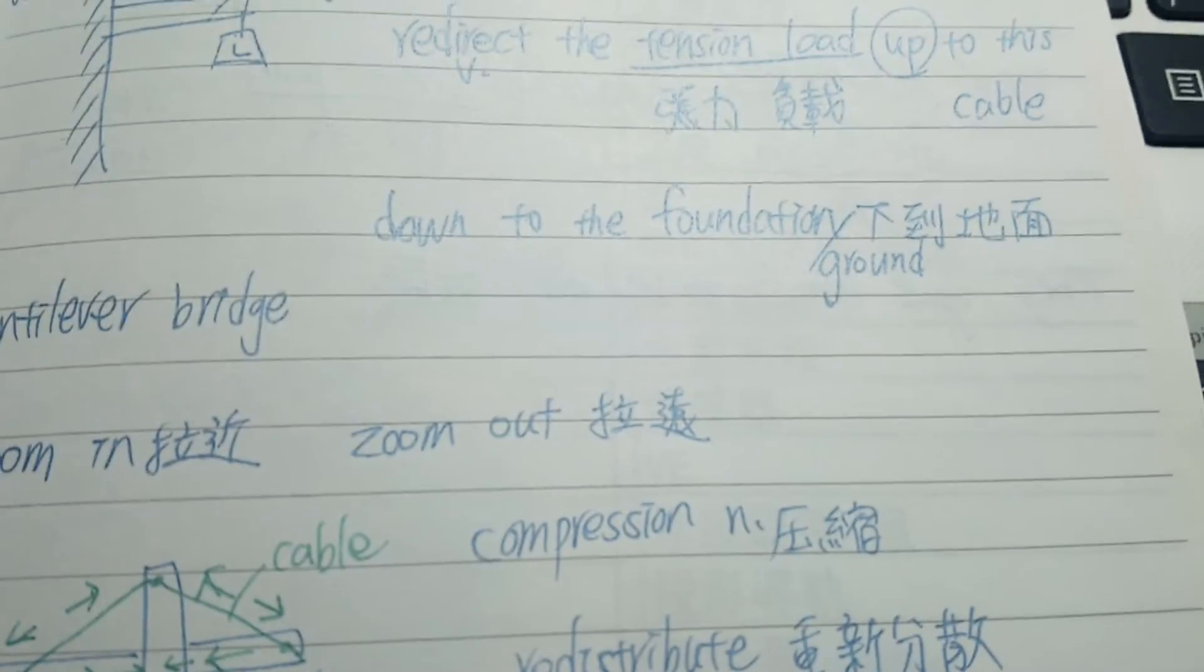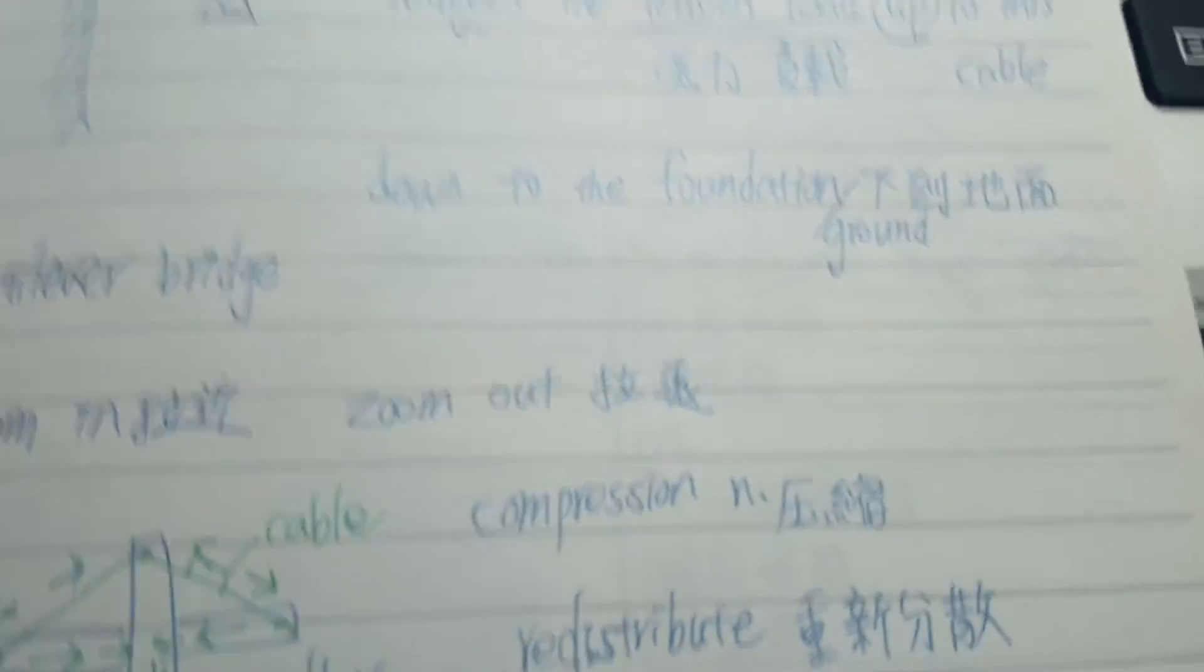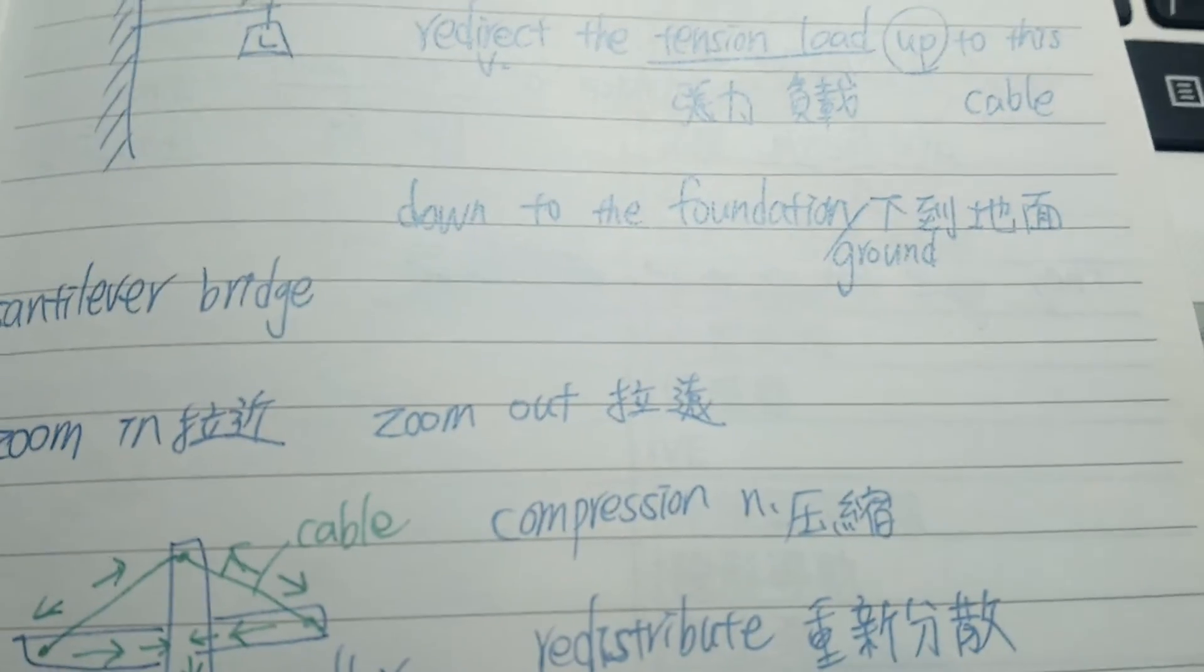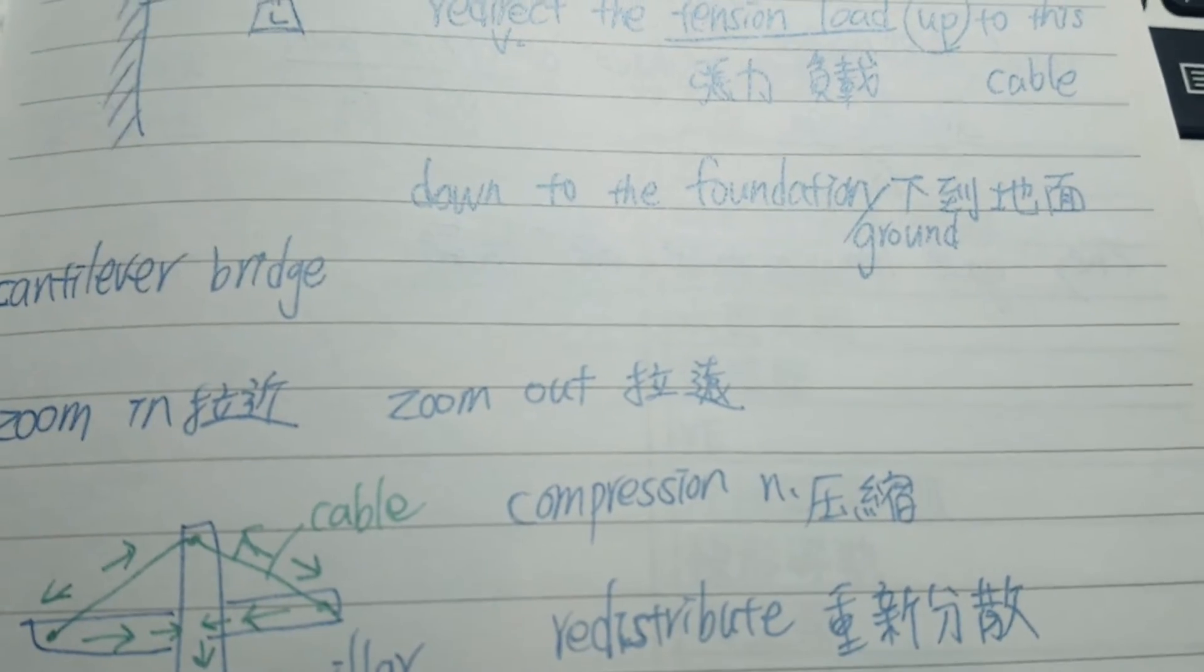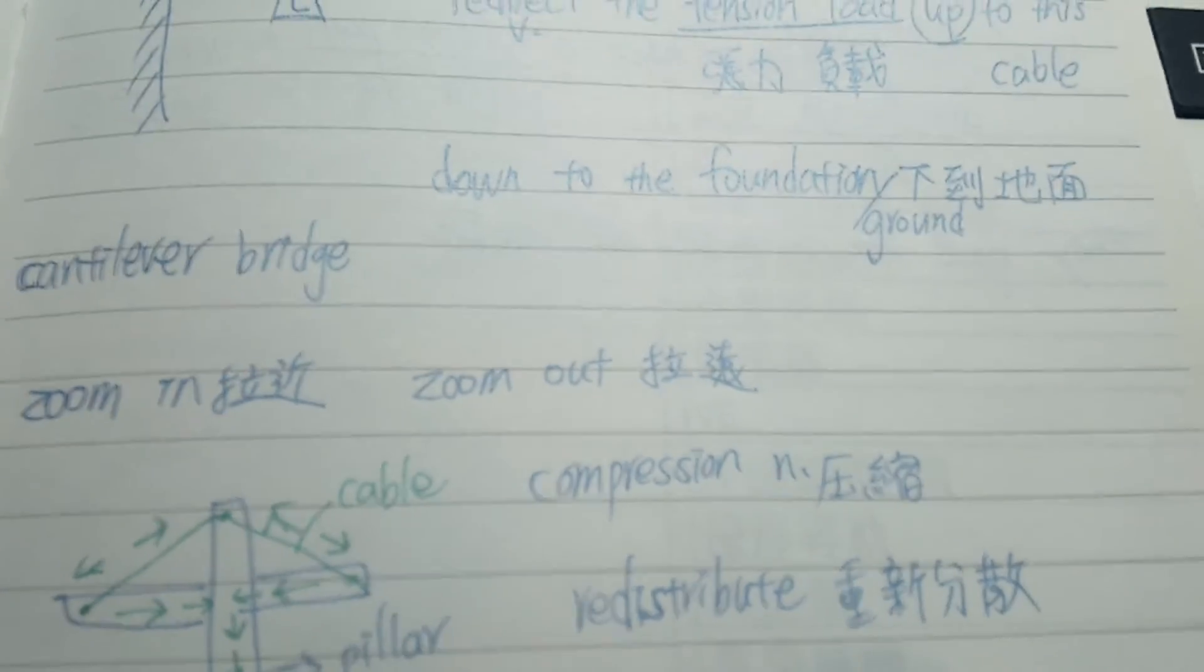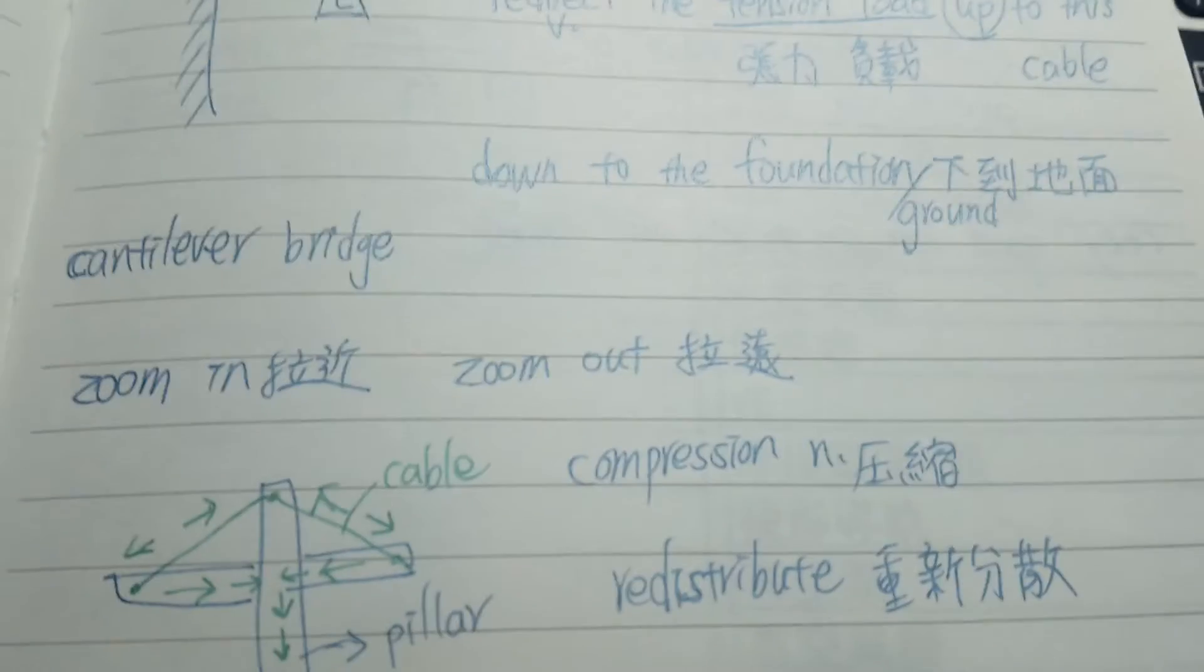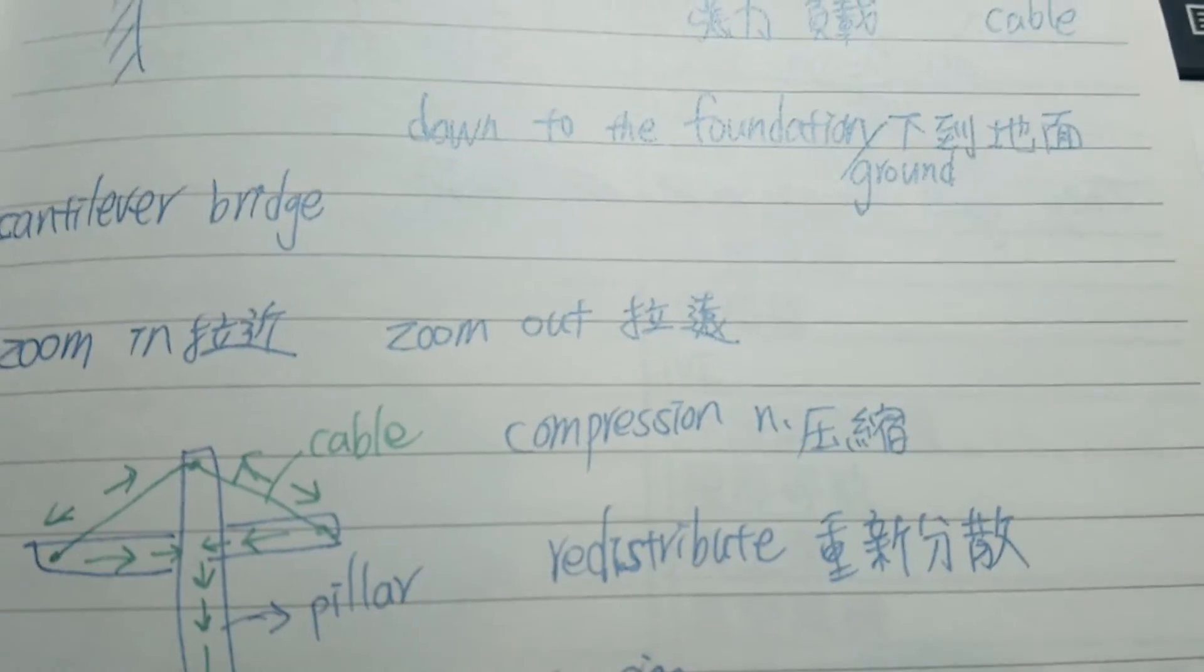We will start with the foundation. 我們先從基底開始好了. Which we will put right down here. 好,我們把它放在這邊. Zoom in on that a little bit. 來那個鏡頭再拉近一點來看. Foundation,基底, 在 on the ground. 它是在地面上的.